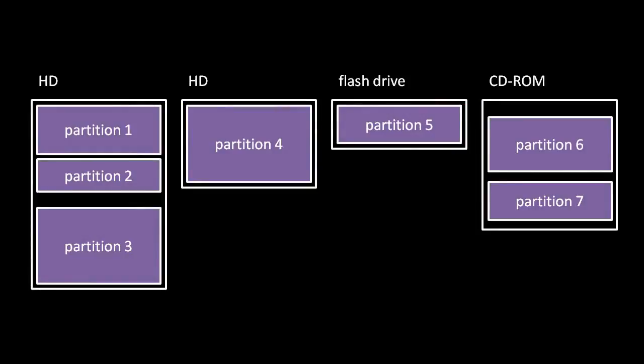As we've mentioned, device drivers handle the business of how exactly to talk to an IO device, including storage devices like hard drives. However, operating systems provide an extra layer of abstraction for storage devices called the file system, which presents storage space as a hierarchy of directories and files. When your program uses a hard drive, you don't want to concern yourself with the details of moving heads and spinning platters — you just want to read and write data in contiguous units called files, organized into directories. The file system provides this abstraction, allowing programmers to read and write data from any kind of storage in the same way, whether a hard drive, an optical disk, a flash drive, or whatever.